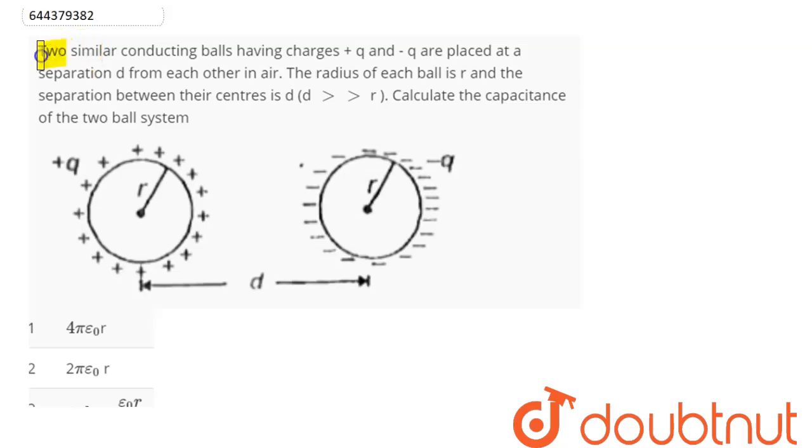Question is: two similar conducting balls, each having charges +q and -q are placed at separation d from each other. The radius of each ball is r and the separation between their centers is d where d is very very greater than r.